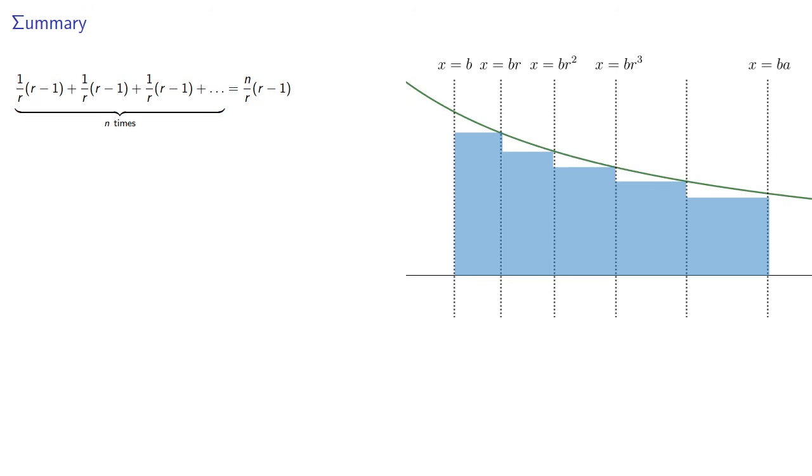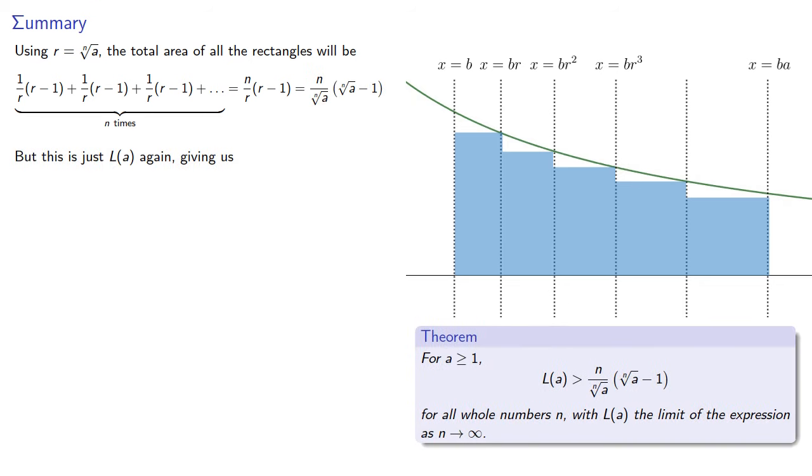And again, we can rewrite that using r as the nth root of a. But this is just l of a again, giving us the result: for b greater than 0, the area under y equals 1 over x over the interval from b to ba is just l of a.